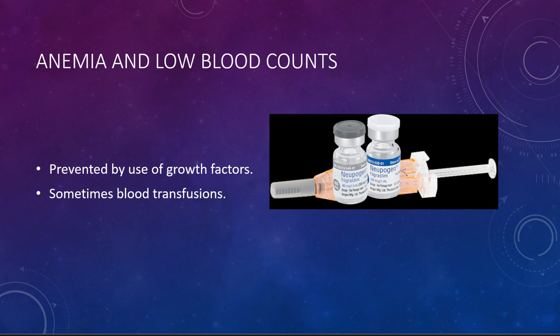Another major problem is that hemoglobin can fall and cause anemia. Also, the WBC count can fall and cause infections. But now we have growth factors — injections of Neupogen — which will increase the blood count after chemotherapy is given. This has been a really dramatic advance in the science of chemotherapy, because now we can give good doses of chemotherapy without fearing the blood count crashing down. There are also injections to improve hemoglobin, and sometimes blood transfusions are needed as well.